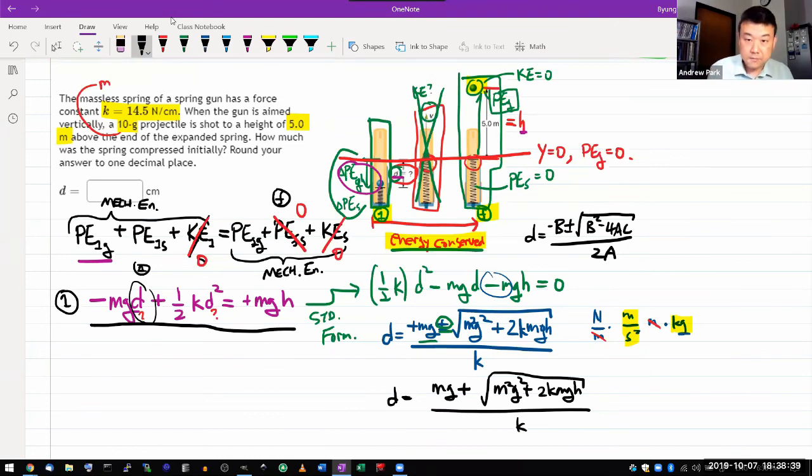I guess the rest is kind of plugging in numbers. You are given value of M, you know G, you know K, you know H. Just make sure you convert everything into SI basic units so that units just magically work out. So yeah, this is how much you compress it.